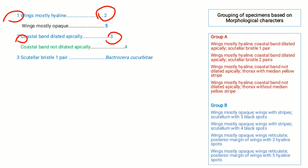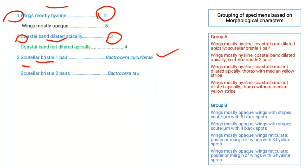Number three indicates scutellum bristle one pair — a specimen with wings mostly hyaline, coastal band apically dilated, and scutellum bristle one pair is identified as Bactrocera cucurbitae. The specimen with wings hyaline, coastal band apically dilated, and two pairs of scutellum bristles is identified as Bactrocera tau.